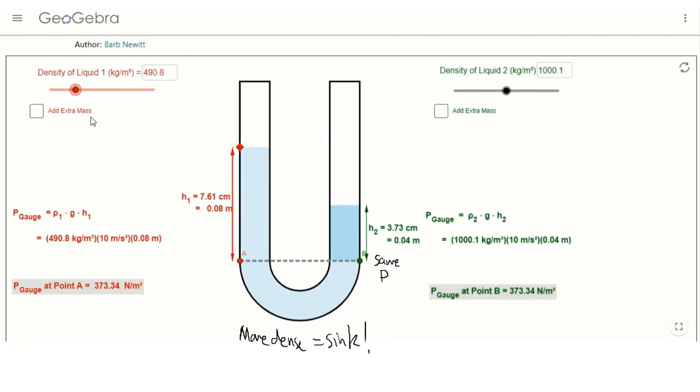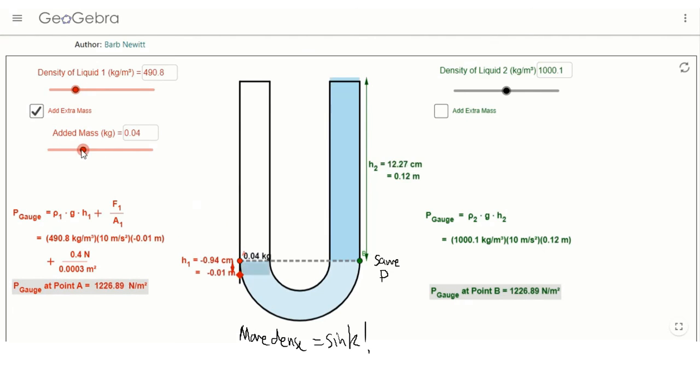So if I add an extra mass—what is a mass? This little gray thing here, maybe it's like a block or something like that—add extra mass. Oh, then now this left side got help to press down the liquid. Means the pressure from this mass and the pressure from this height of water equals to the pressure of this entire column of different liquid.